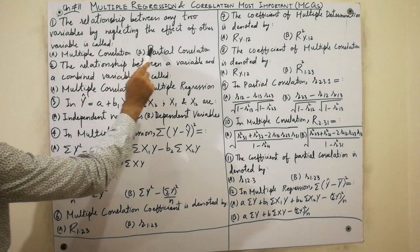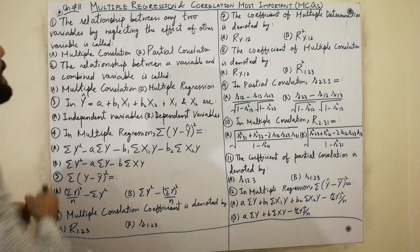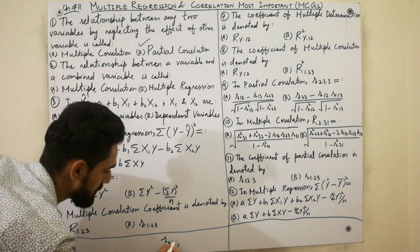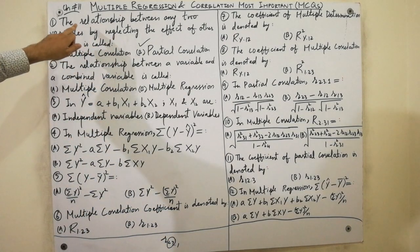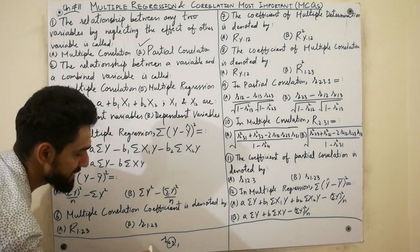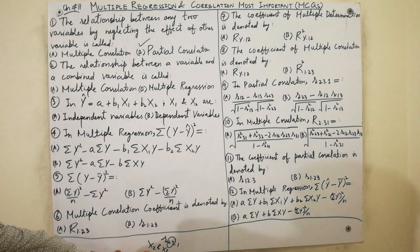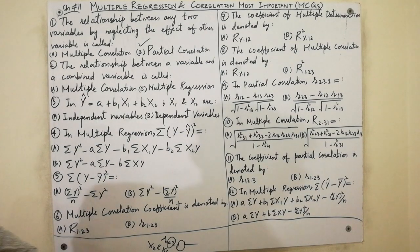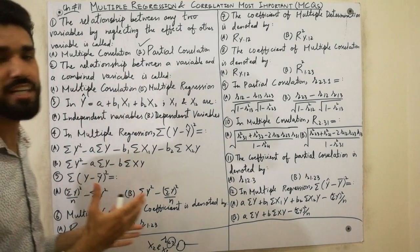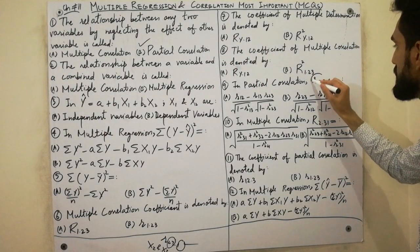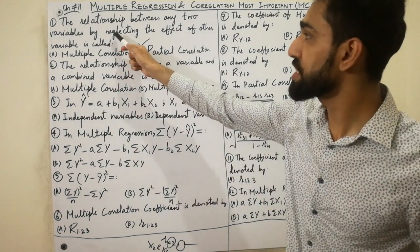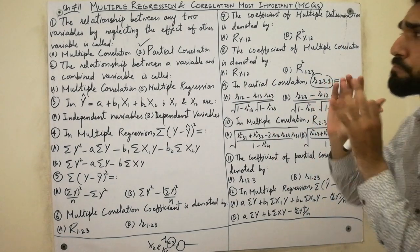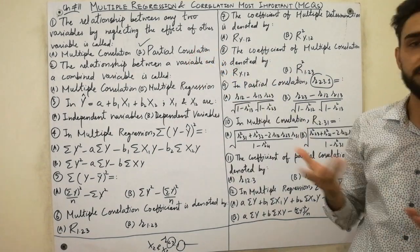The first MCQ: the relationship between any two variables by neglecting the effect of another variable — what is this called? This is called partial correlation. For example, the relationship between x2 and x3 by neglecting the effect of the third variable is partial correlation, denoted as r 25.1 or r 12.3. This is the most important definition for all universities.